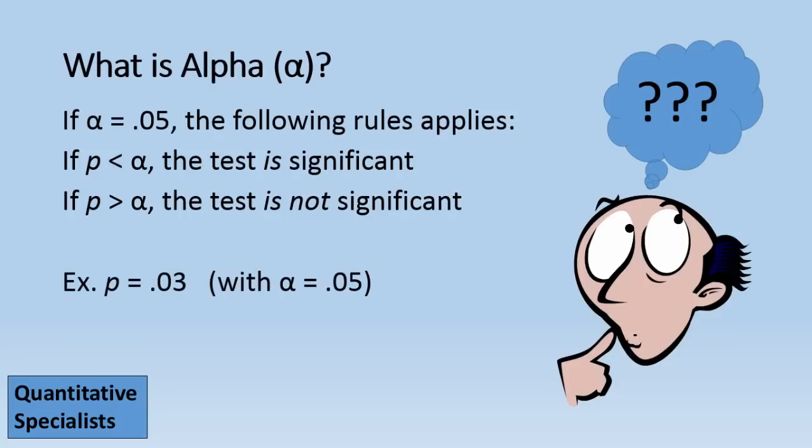So as an example, if we had a p-value or a SIG of .03, using the rule up above with an alpha of .05, would the test be significant or not? Well the test would be significant, right? Because .03 is less than .05.